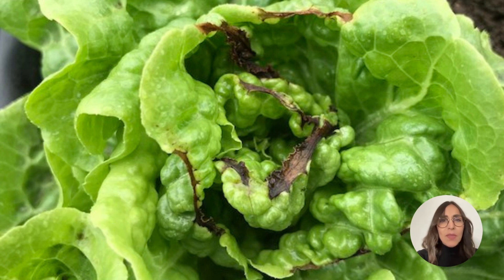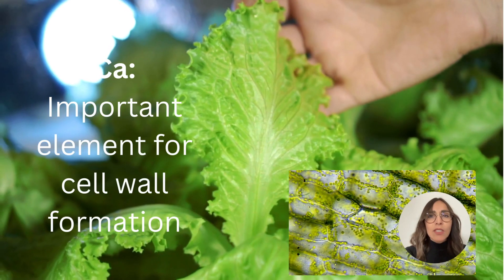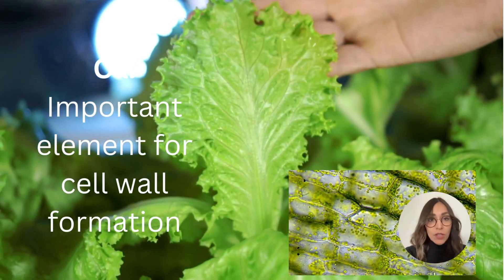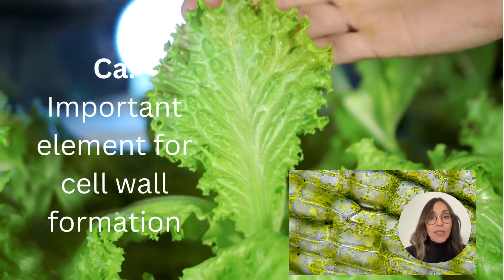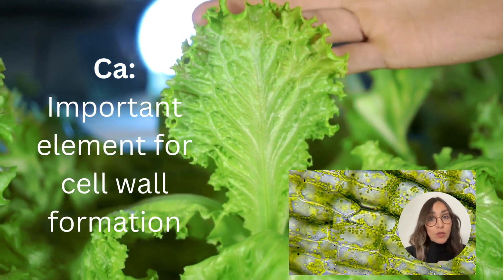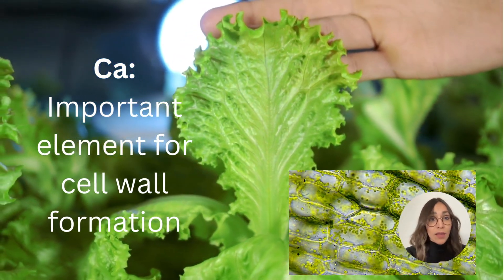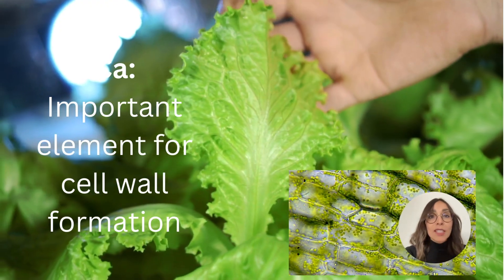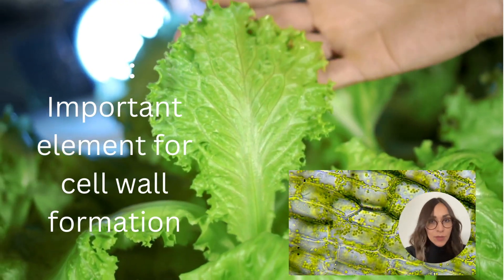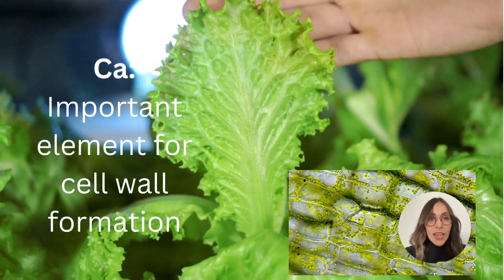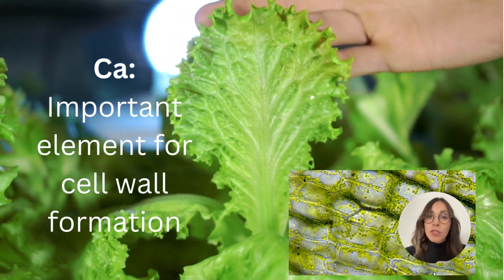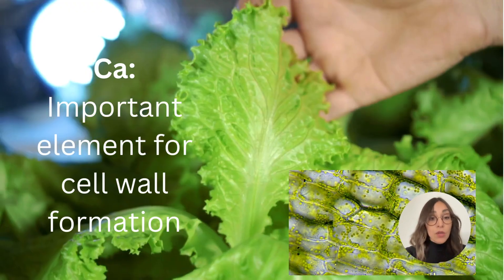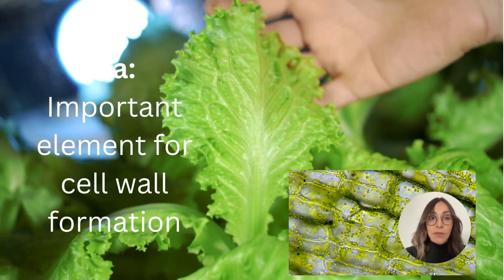Why does this happen? Calcium is important for cell wall formation, and plant cells are not able to survive without a cell wall. When a plant experiences calcium deficiency, new cells die, and this is why we see the presence of necrotic tissue in growing areas.